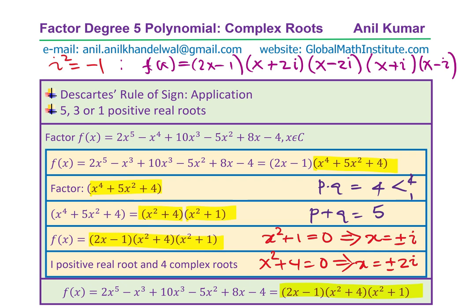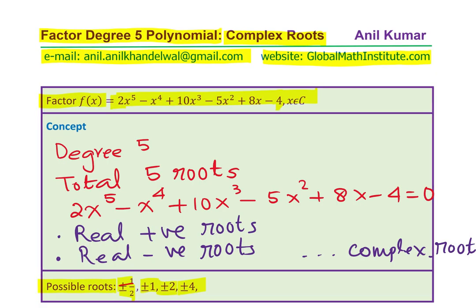We confirmed that positive roots could be 5, 3, or 1 — and in this case we got exactly one positive real root at x = ½. All other roots are complex. Descartes' Rule helped us eliminate most possible factors and focus on the correct ones, giving us a quick solution. I hope it helps — feel free to write comments, share your views, and subscribe. Thanks and all the best.